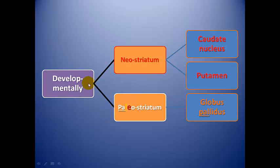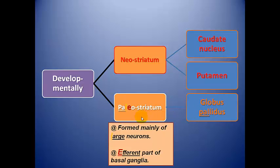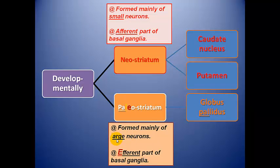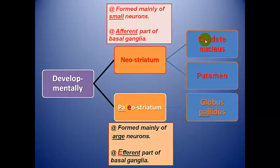Regarding developmental divisions: the paleostriatum forms the globus pallidus. It has large neurons and is the efferent part of the basal ganglia — the fibers arising from the basal ganglia arise from the globus pallidus, which is divided into globus pallidus inhibitory and globus pallidus excitatory. On the other hand, the neostriatum has small neurons and is the afferent part of the basal ganglia, receiving fibers from other parts of the CNS.